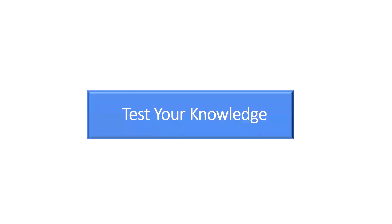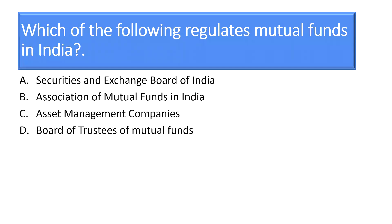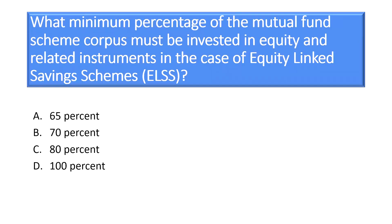Now let's test your knowledge. Question 1: Which of the following regulates mutual funds in India? A. Securities and Exchange Board of India. B. Association of Mutual Fund in India. C. Asset Management Companies. D. Board of Trustees of Mutual Fund India. Correct answer: A — Securities and Exchange Board of India. Question 2: What minimum percentage of a mutual fund scheme corpus must be invested in equity and related instruments in case of ELSS? A. 65%. B. 70%. C. 80%. D. 90%. Correct answer: C — 80%.